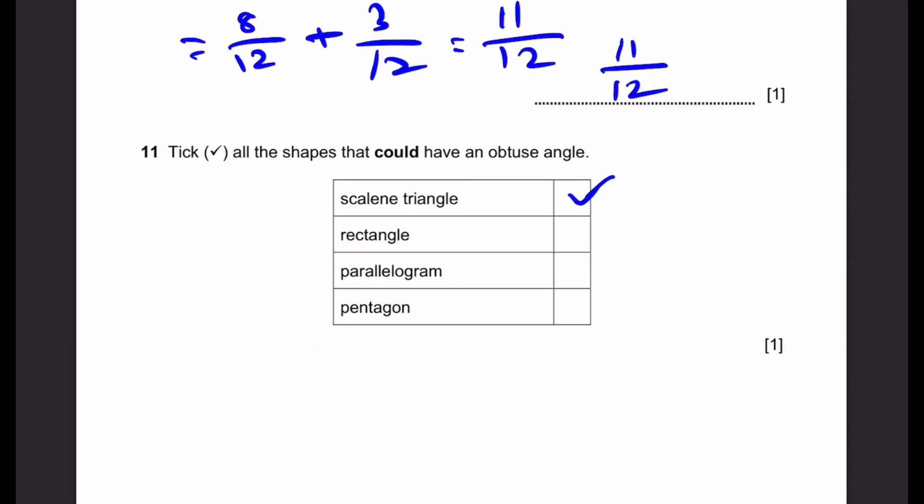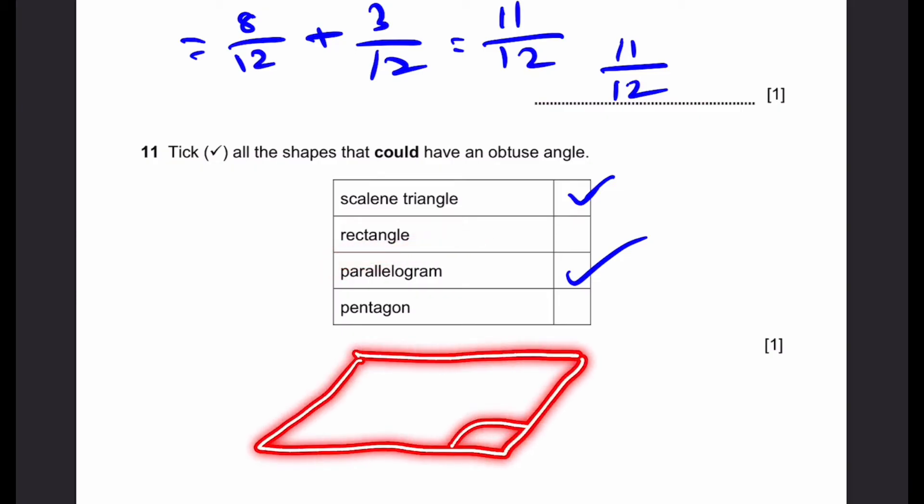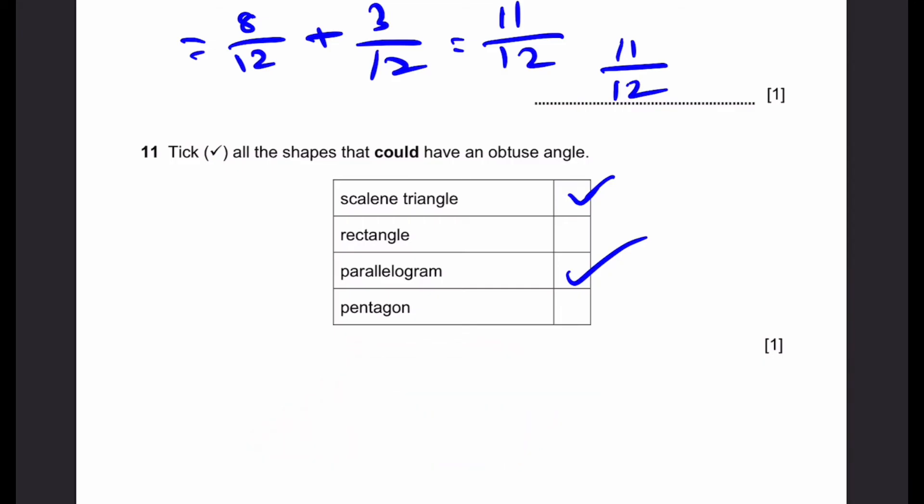Parallelogram: this can have obtuse angles, and it's not a could. It actually must have obtuse angles, because parallelograms, if they are not rectangles, will look something like this. Then, these two are obtuse. Therefore, it must have obtuse angles.